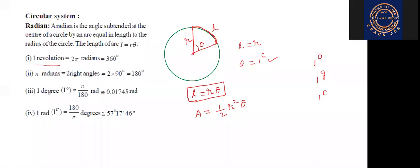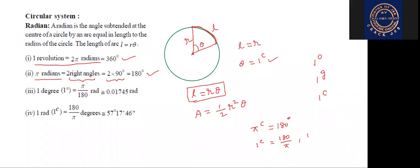One revolution means 2π radians, that is 360 degrees. π radians means two right angles — 2 × 90 = 180 degrees. So π means 180 degrees. One degree is equal to π/180 radians. π radians is equal to 180 degrees. One radian is equal to 180/π degrees.